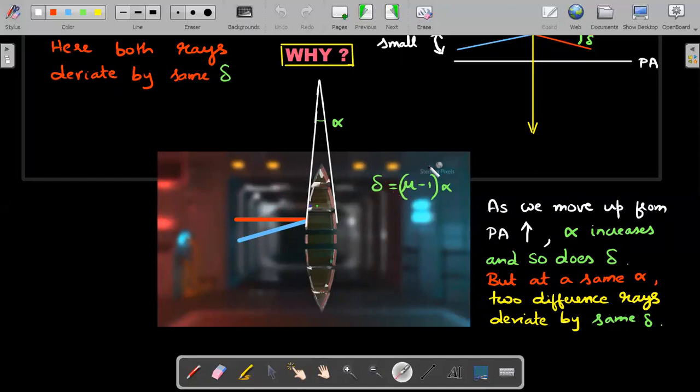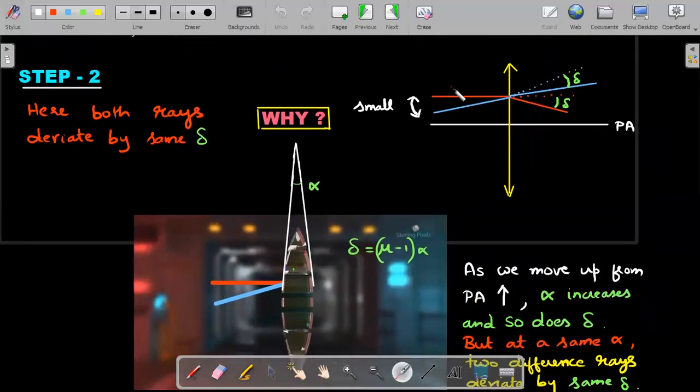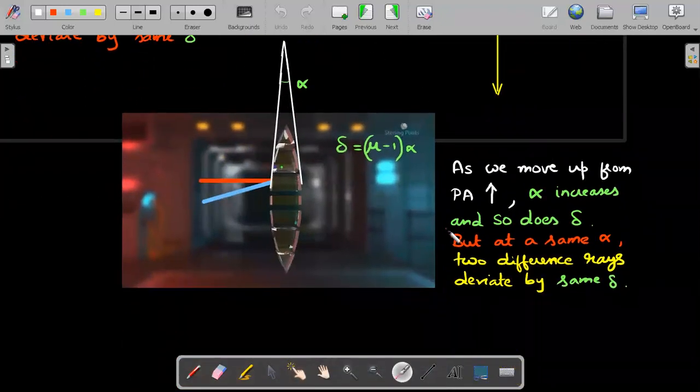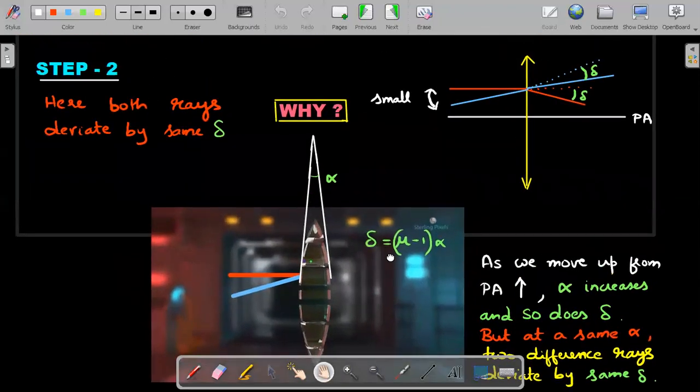For any ray, the formula of μ - 1 × α that I used in the previous page should be applicable. And that is the reason for the claim that the two rays should actually deviate by the same angle. It concludes two important things. As we move up from the principal axis, the value of alpha increases. You could see that if I had picked this piece and hit two rays at this place, the prism would have a greater angle alpha. So alpha increases and therefore if alpha increases, the value of angle of deviation also increases. But at the same alpha, that means two different rays hitting the same position, they deviate by the same delta. This is the second step of our derivation.